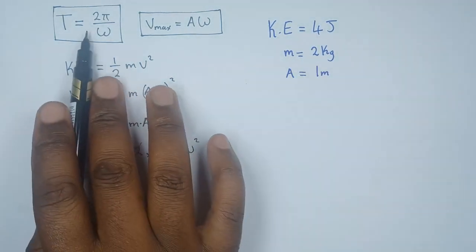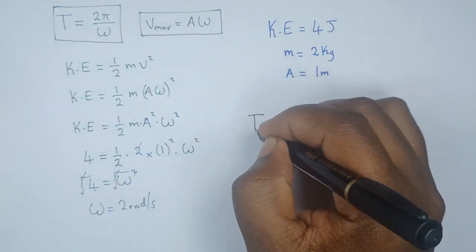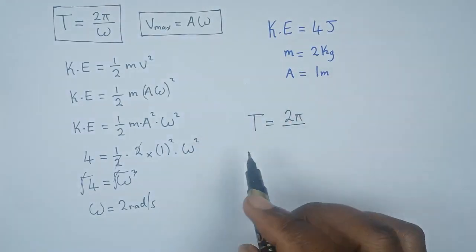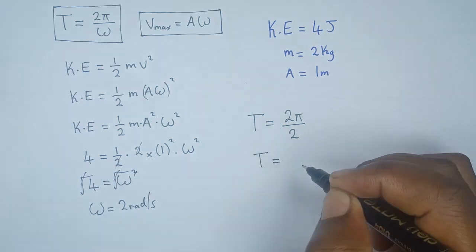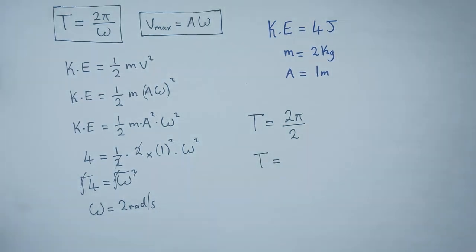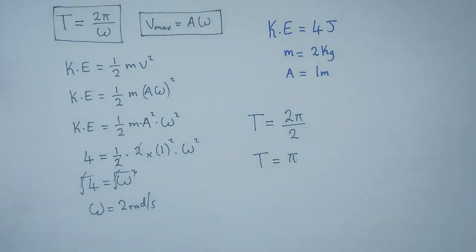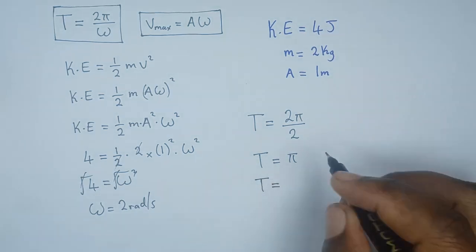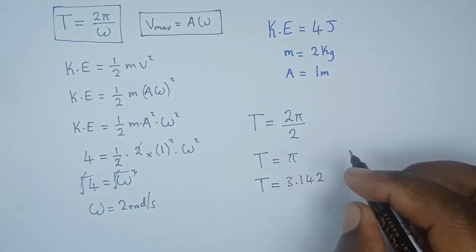We say period is given by T = 2π/ω, which is 2. So period will be equal to just π, and the value of π, so the final expression for period will simply be 3.142 seconds.